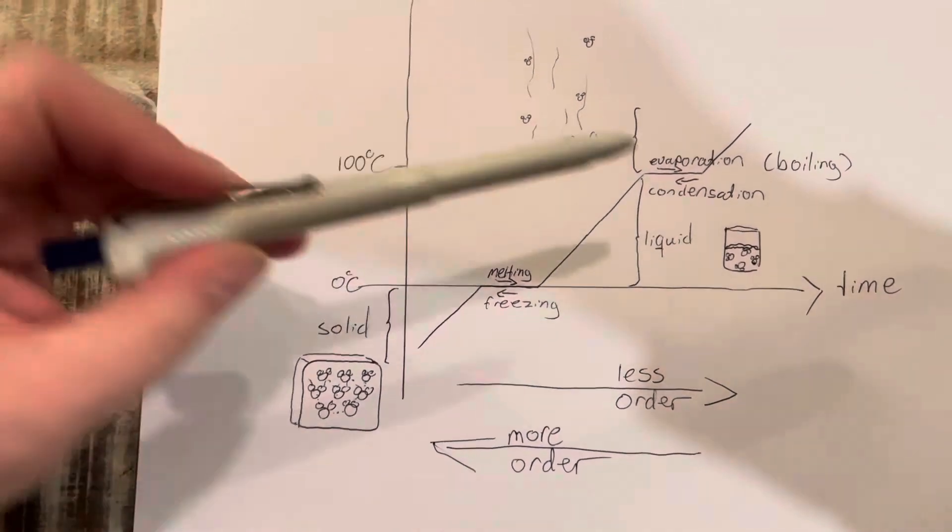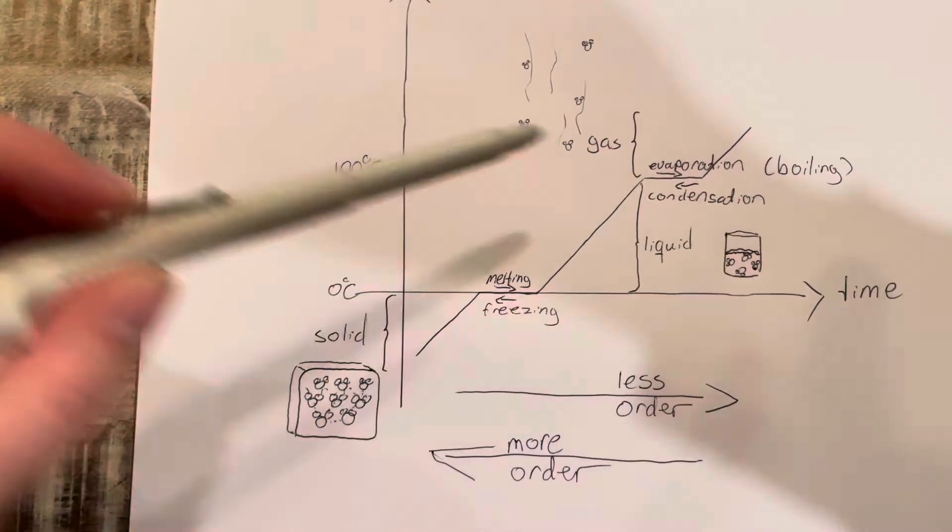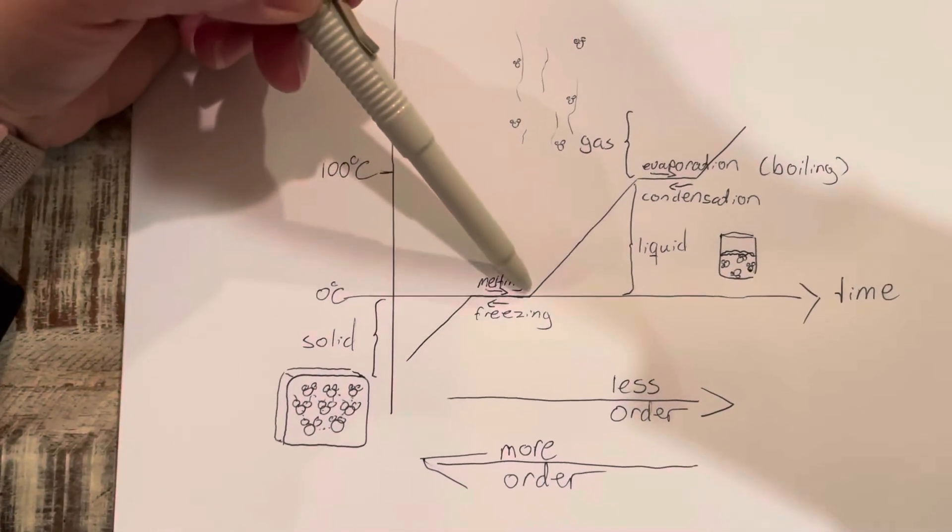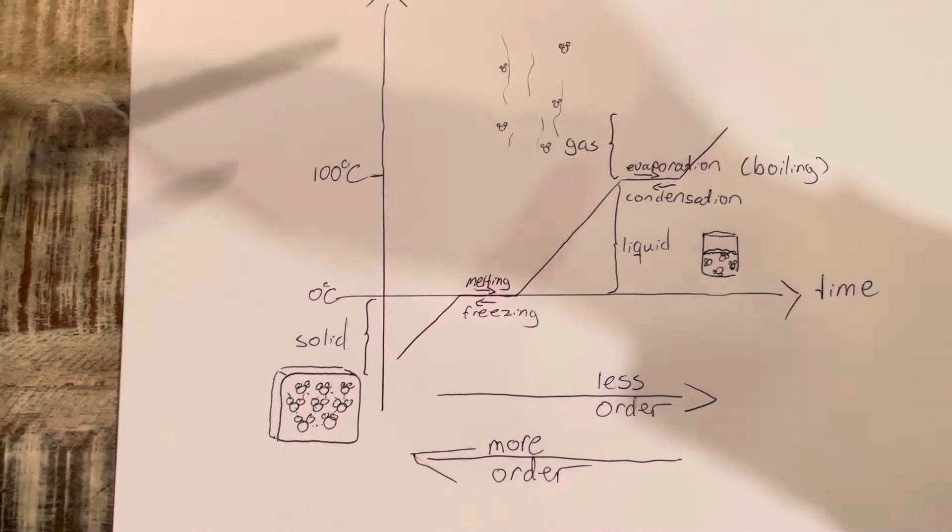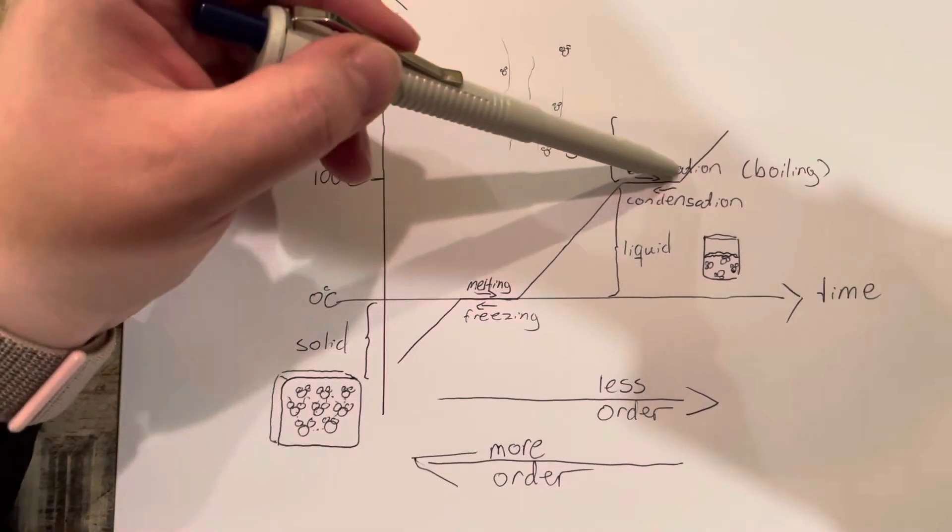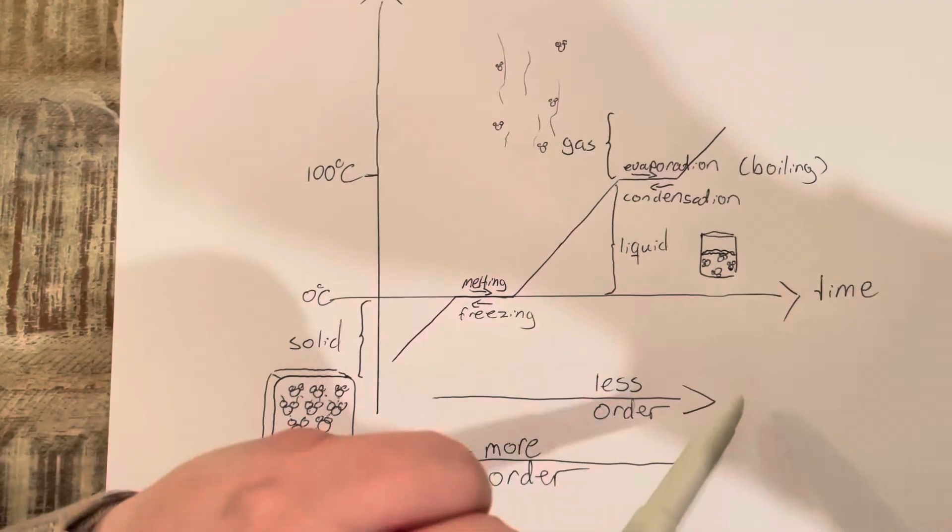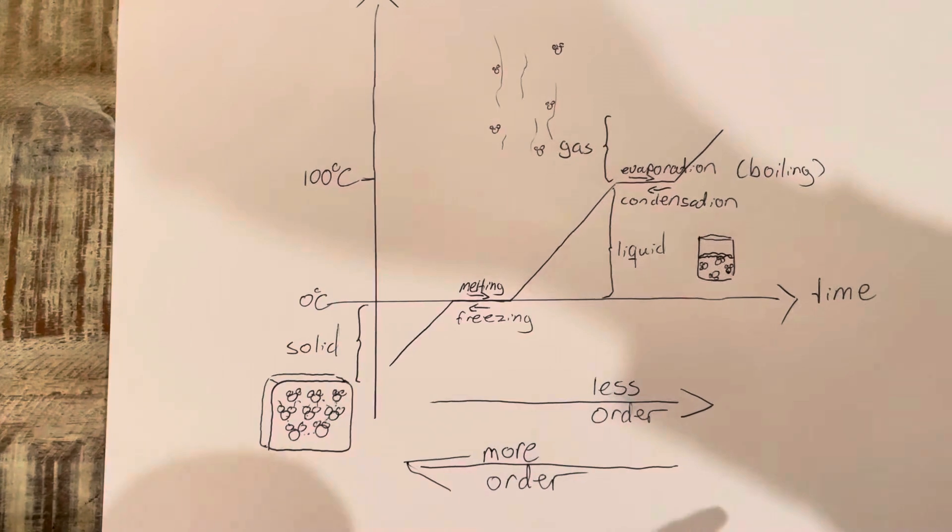Now you have a liquid. The energy is now going to heat up the liquid until it gets to 100 degrees Celsius. You're then going to have evaporation or boiling, and the opposite is condensation.